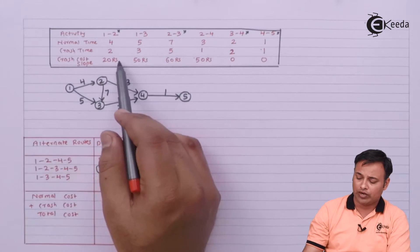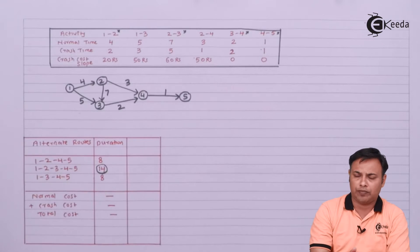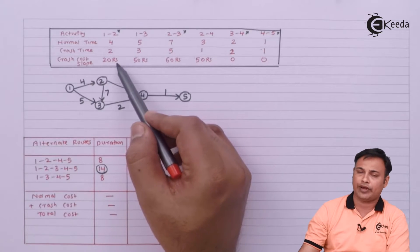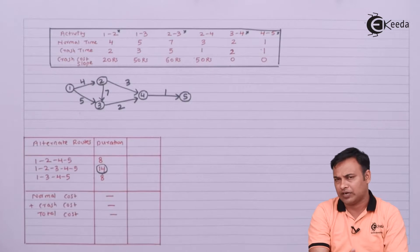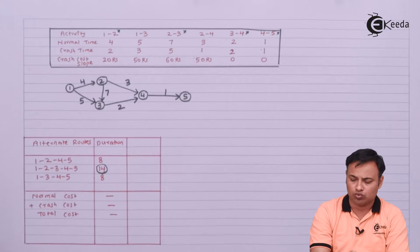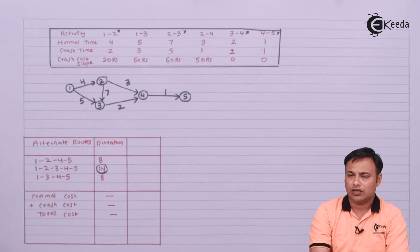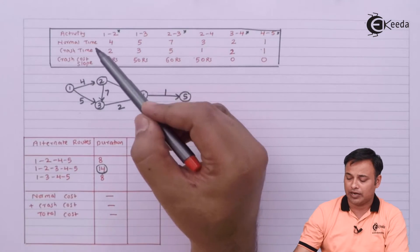So it is between 1-2 and 2-3. The cheaper one is 1-2 with 20 rupees per unit of time. So I will crash 1-2. The second thing is by how many duration I can crash 1-2. As per this table...